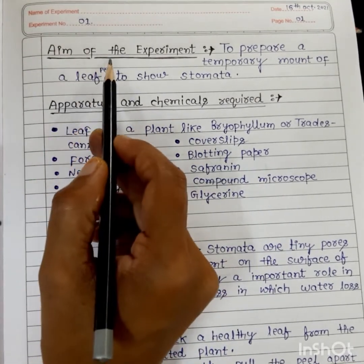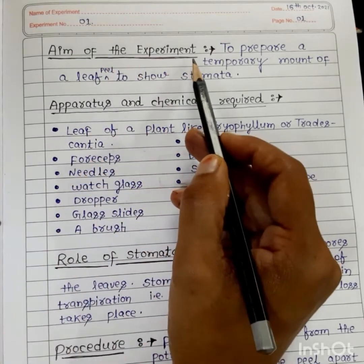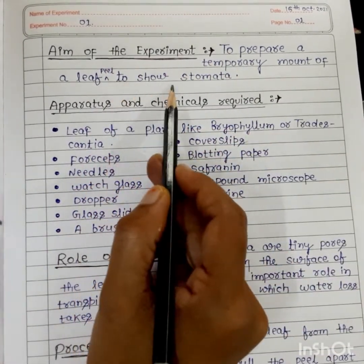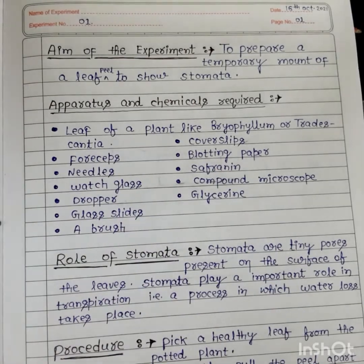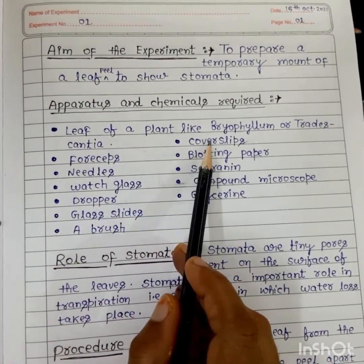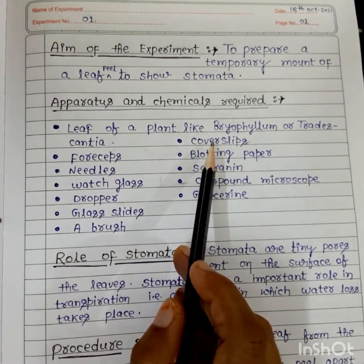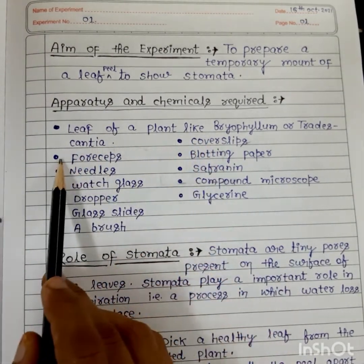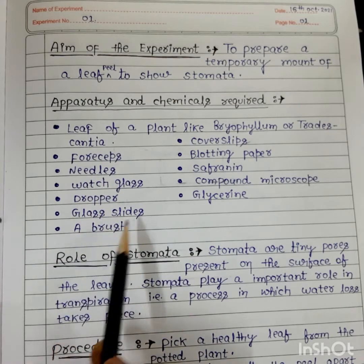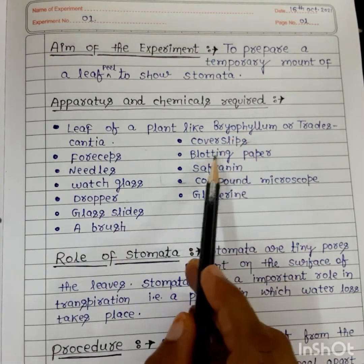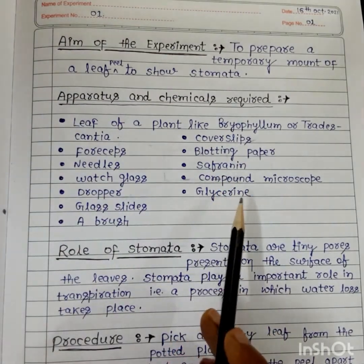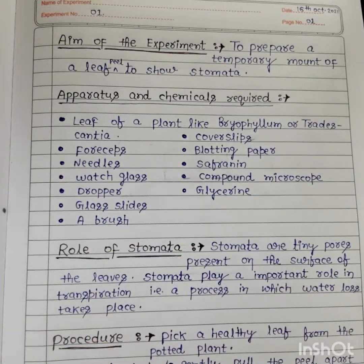The name of the experiment or aim of the experiment — both are the same. The aim is: to prepare a temporary mount of a leaf peel to show the stomata. For this, we require: a leaf of a plant like Bryophyllum or Tradescantia, broad forceps, needles, watch glass, dropper, glass slides, a brush, cover slips, blotting paper, safranine, compound microscope, and glycerin. These are the apparatus and chemicals required.